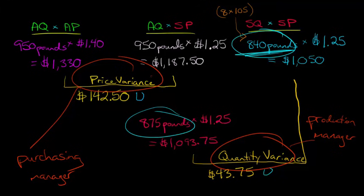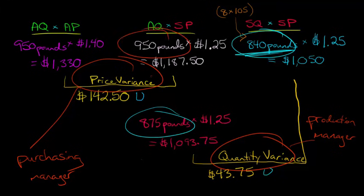You might notice that although in the past we've talked about a total variance combining price and quantity, we can't do that in this case. Because we used a different amount than we purchased — 875 pounds used versus 950 pounds purchased — a total variance wouldn't make sense here and wouldn't tell us anything meaningful.